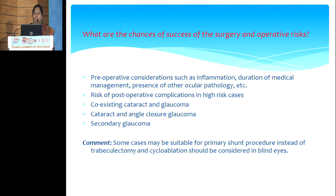What are the chances of success of surgery and the operative risks? Pre-operative considerations include inflammation, duration of medical management, and presence of other ocular pathology. The risk of post-operative complications is higher in cases such as Sturge-Weber syndrome, earlier failed surgeries, co-existing cataract and glaucoma, cataract and angle-closure glaucoma, and secondary glaucoma. In such situations, some cases may be suitable for a primary shunt procedure instead of trabeculectomy, and cycloablation may be considered in blind eyes.